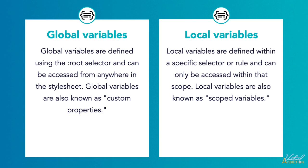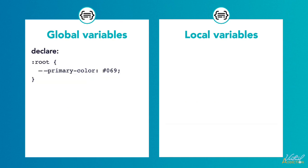The main difference between global and local variables is that global variables are accessible from anywhere in the stylesheet, while local variables are only accessible within the selector or rule that they are defined in. Global variables are useful for defining global styles that need to be reused throughout the website, while local variables are useful for defining specific styles for a particular element or component.